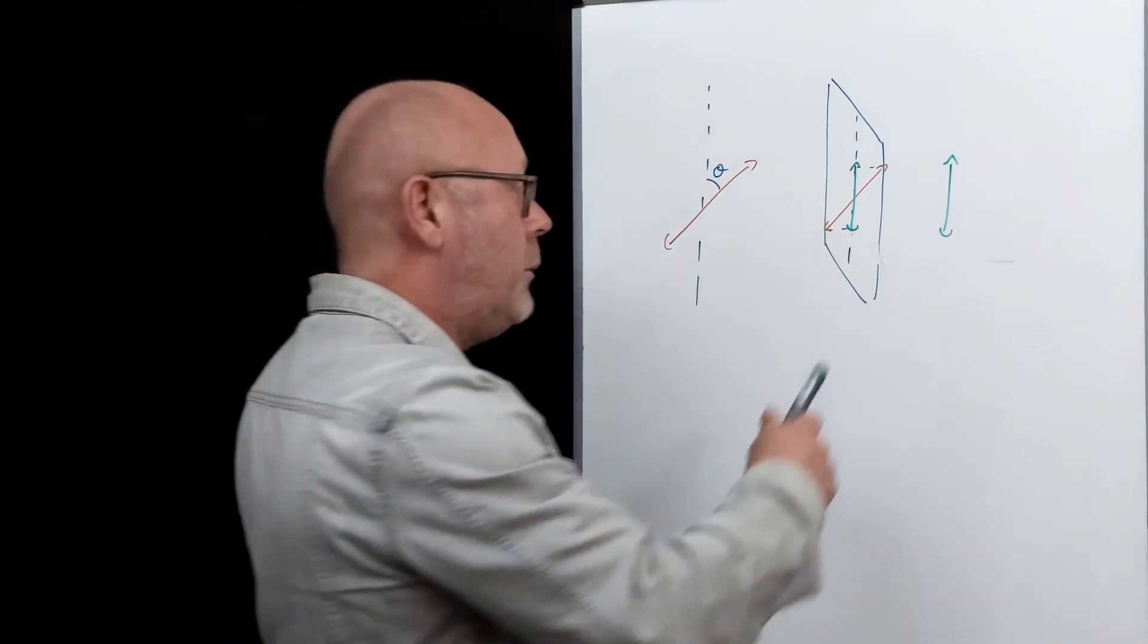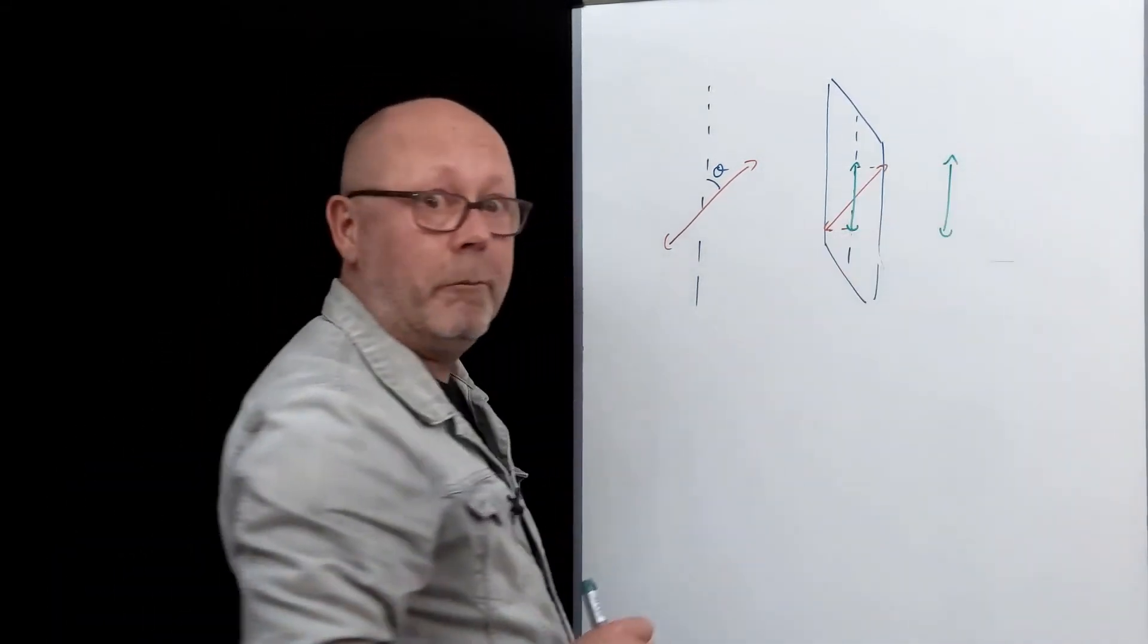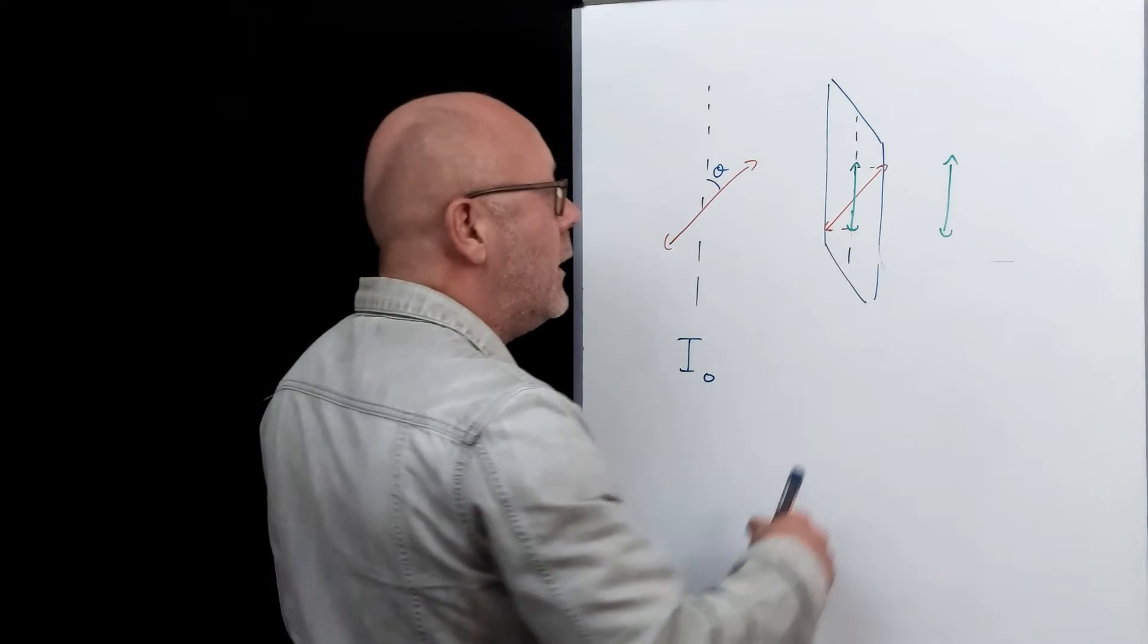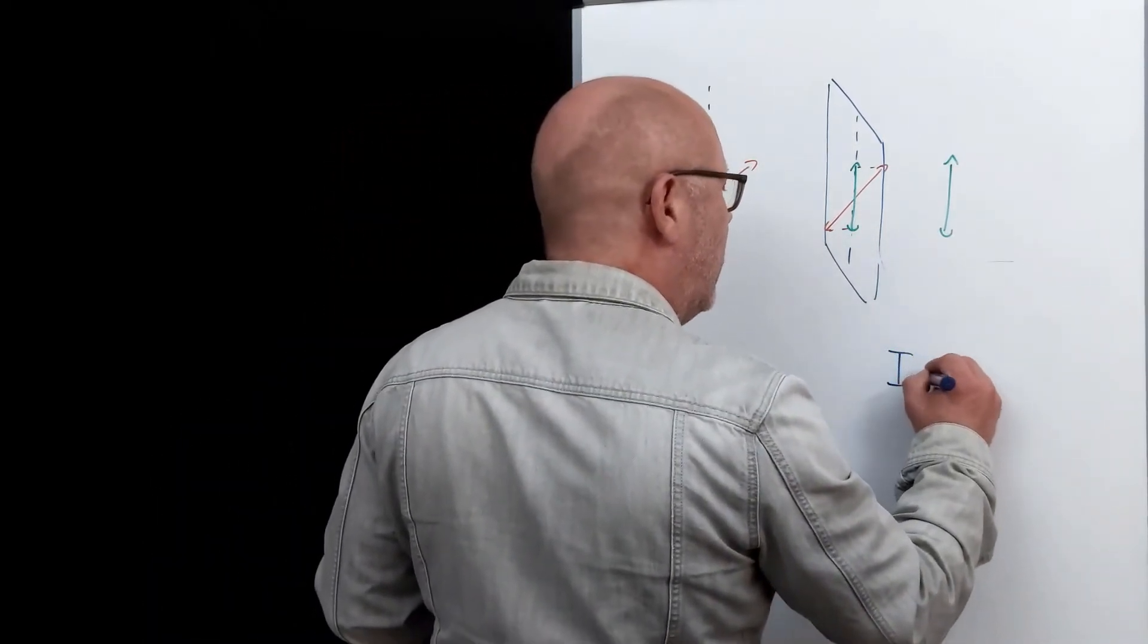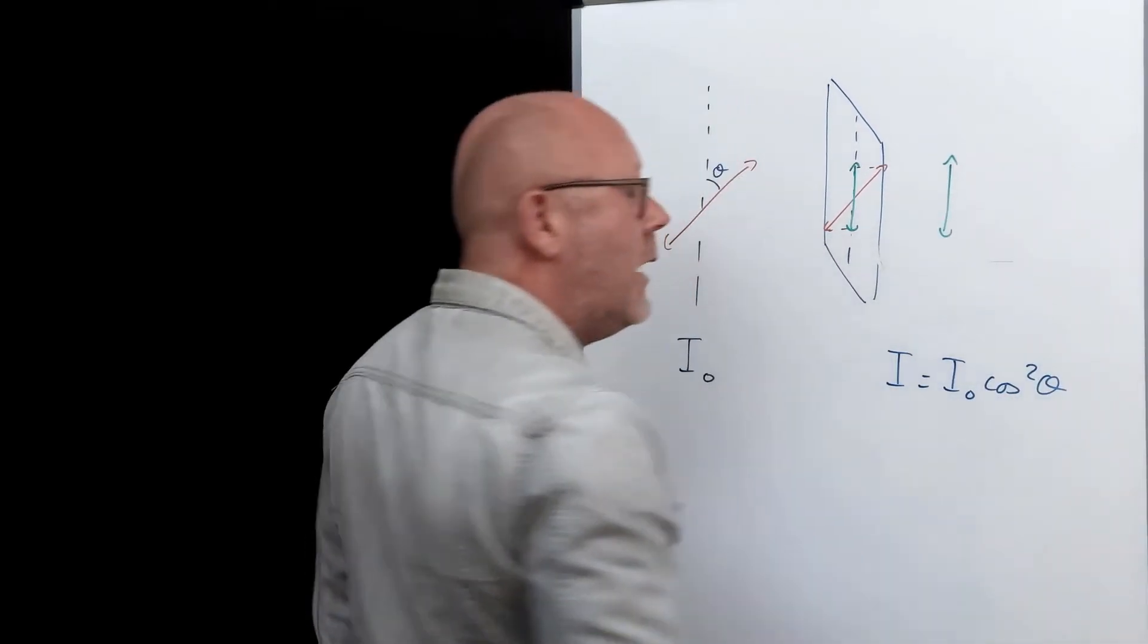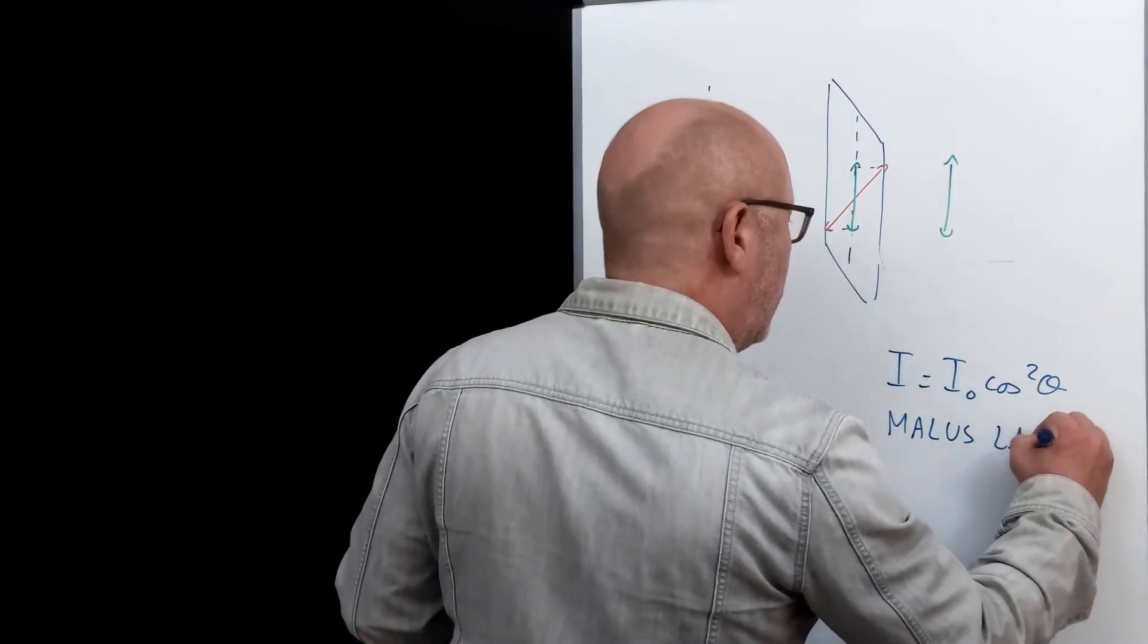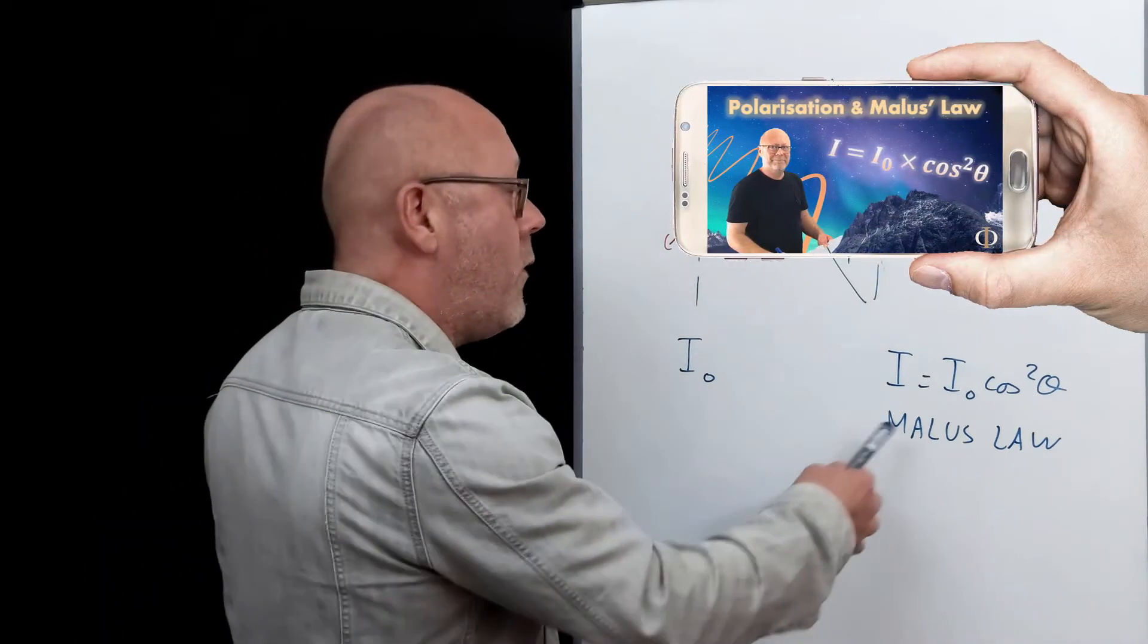So what comes out will be also a polarized wave, but the intensity of it will be smaller. If we label the intensity of the incident wave I0, then the output wave will have an intensity I equals to I0 cos squared of θ. This is called Malus law. If you are curious, you can check out how I derive this law in this video.